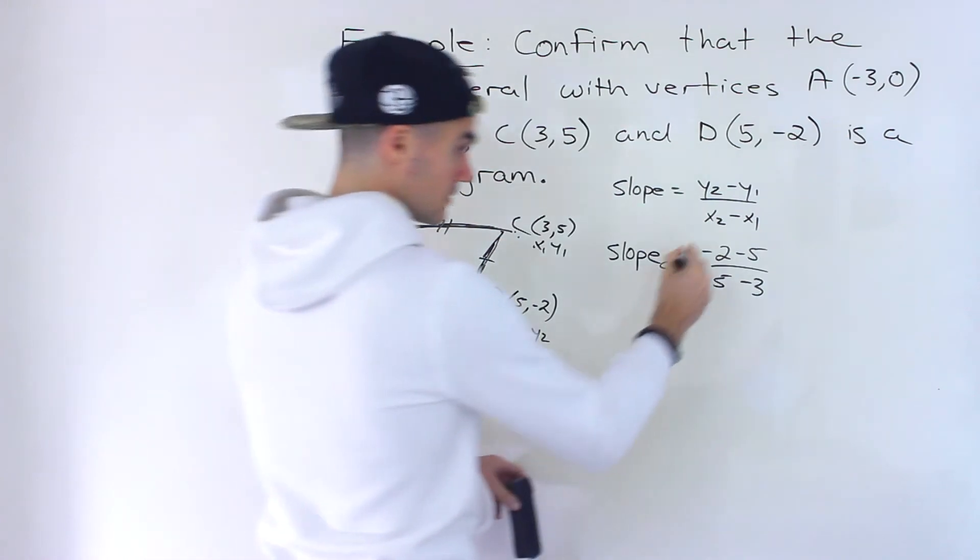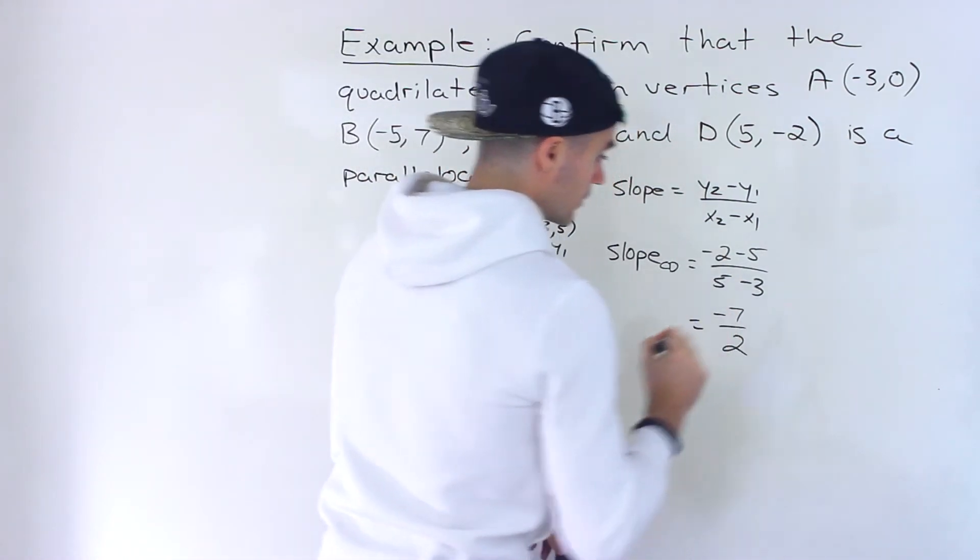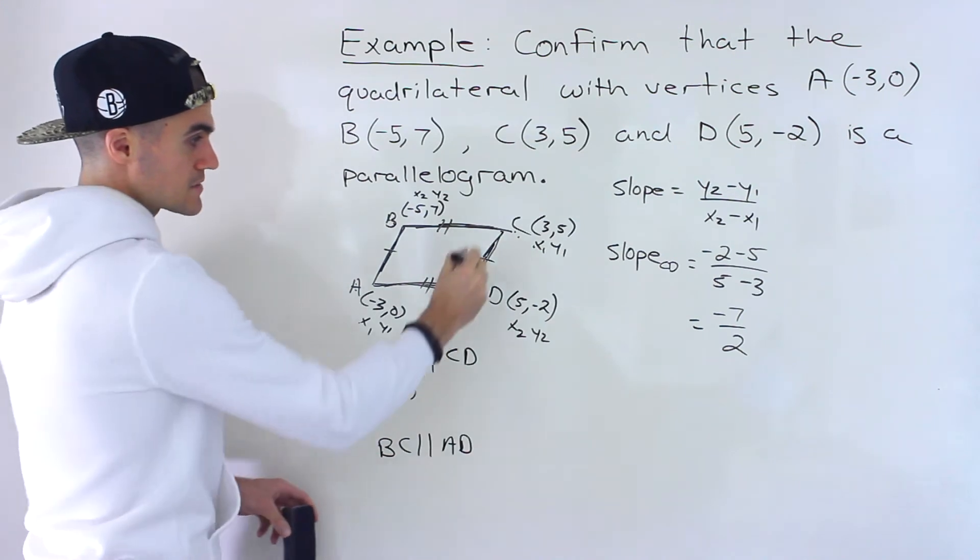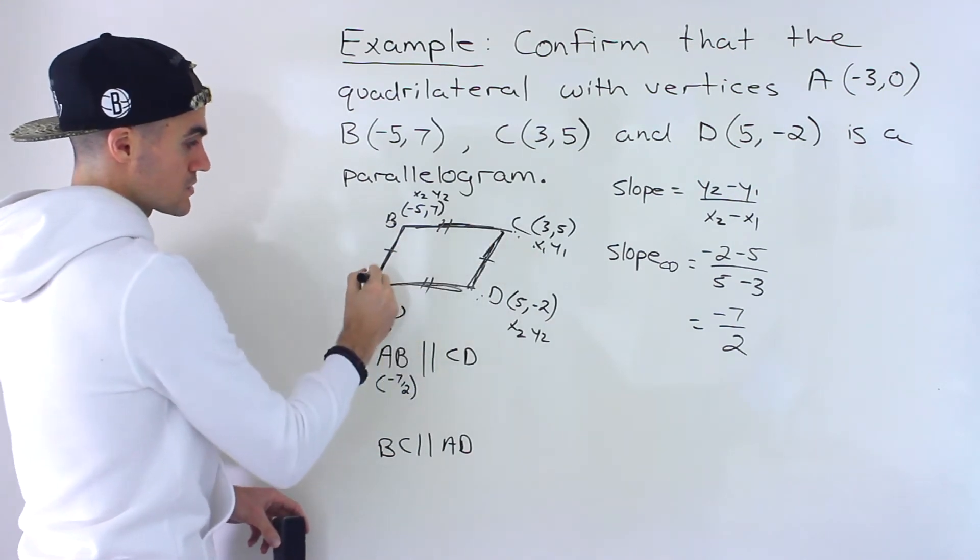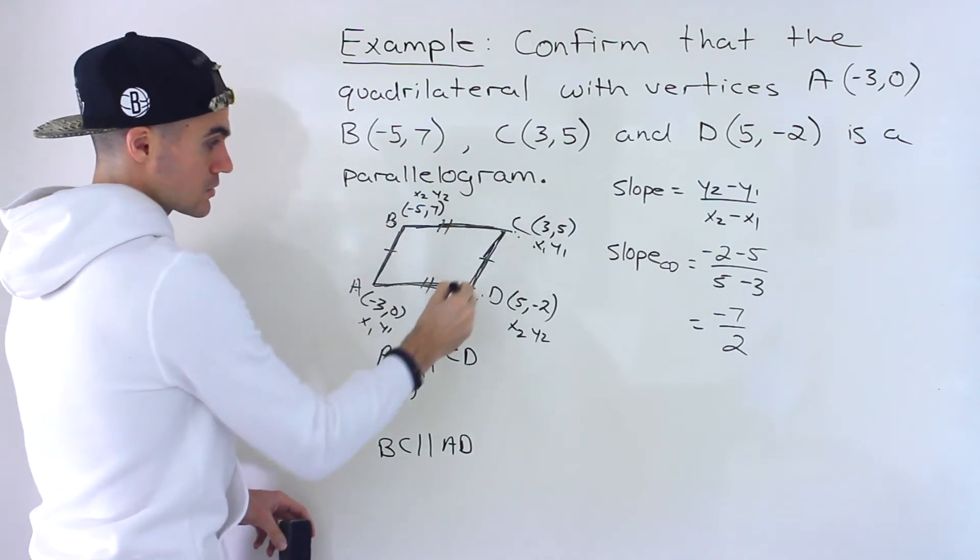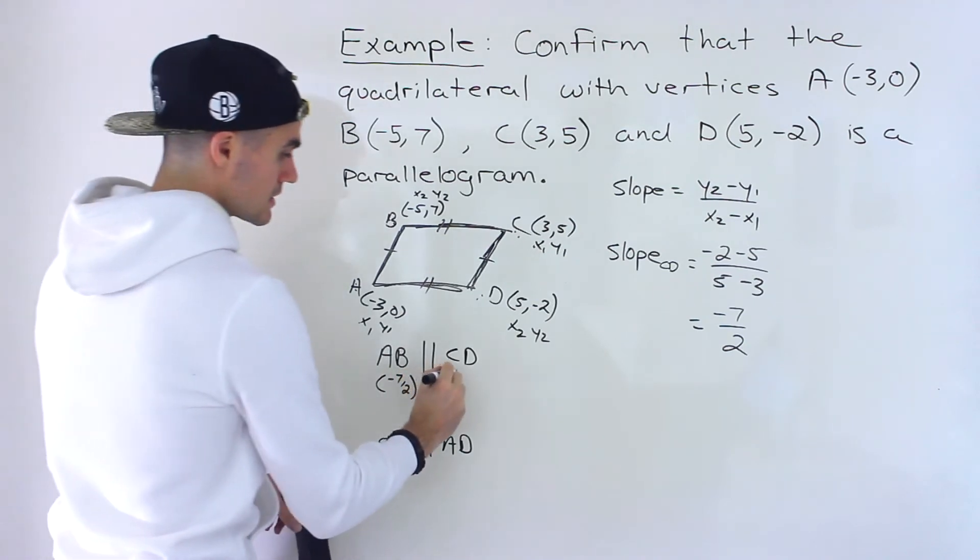And what do we get here? We get -7/2. So we get the same slope for CD. So the slope of AB and the slope of CD is the exact same.